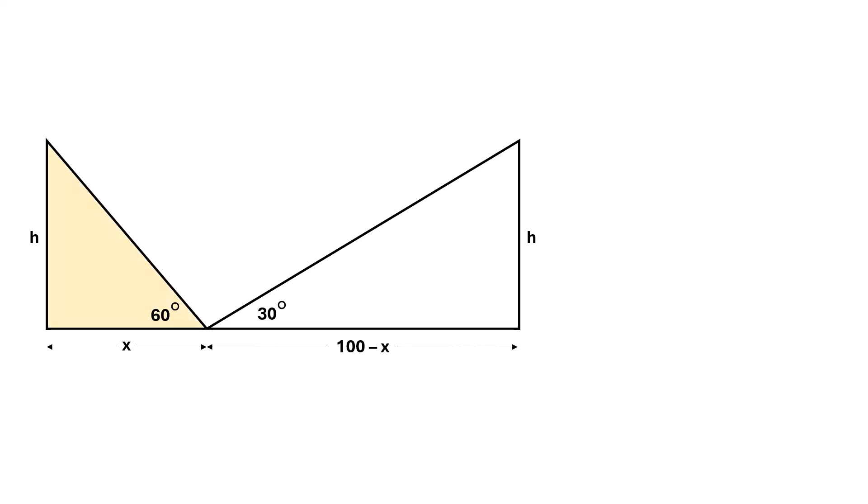Now focus on this yellow triangle. The base angle is 60 degrees. Its height is h, and the base is x, so we can write, tan 60 degrees equals h over x.